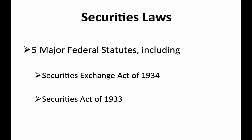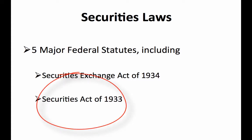The securities laws are made up of five major federal statutes, two of which are the ones we spend most of the time talking about: the Securities Exchange Act of 1934 and the Securities Act of 1933. In this part one discussion we're going to focus on the most significant lessons we should learn regarding the Securities Act of 1933. In part two we'll talk about the lessons from the Securities Exchange Act.